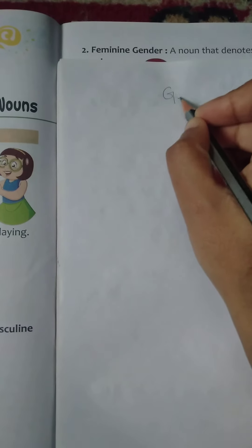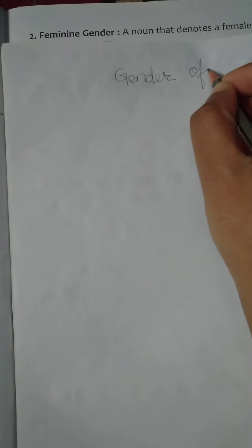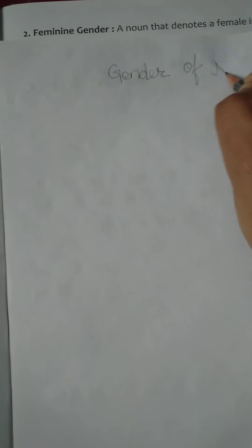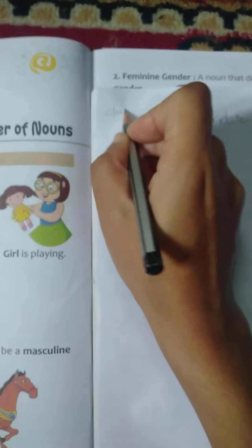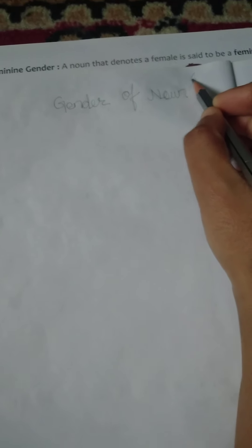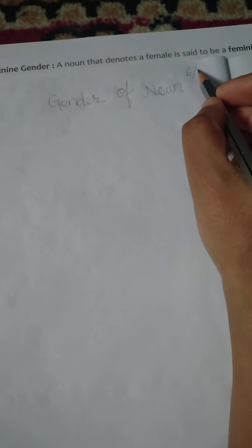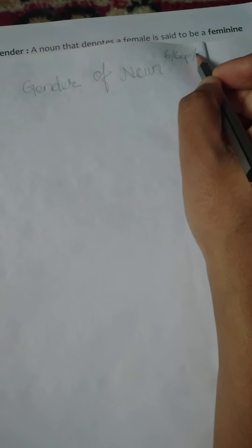G-E-N-D-E-R, gender, O-F, of, N-O-U-N, noun. Write classwork and write down the date. Today's date is 6th of September 2021.